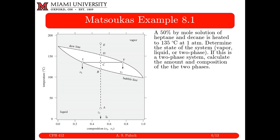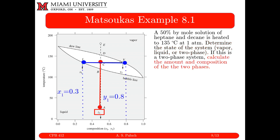From the vertical line, we can identify the bubble point, dew point, and the temperature ranges for vapor, two-phase, and liquid regions. At 135°C we draw a horizontal isotherm, and where the two lines intersect falls inside the two-phase region — so this is a two-phase mixture. By the Gibbs phase rule for a binary system at two-phase coexistence with pressure fixed, there is only one degree of freedom, so fixing temperature fixes everything.